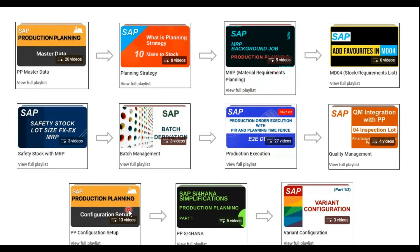The configuration setup is placed last in the sequence because once you've gone through the preceding topics, you'll have an idea of how the processes run — making it easy to understand the configuration and which fields impact which scenarios. If you come to configuration first, you won't know what each field stands for or its purpose. After configuration setup, you can look at the simplification items, which compare features in ECC versus S/4 HANA. Finally, variant configuration is essentially independent — a make-to-order scenario with around three videos.